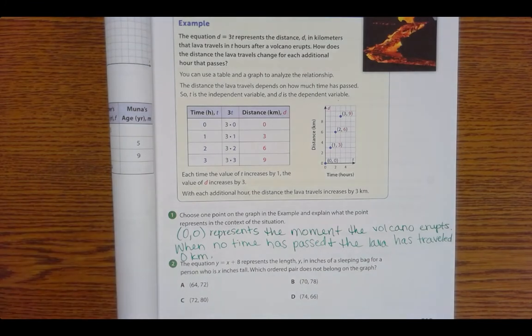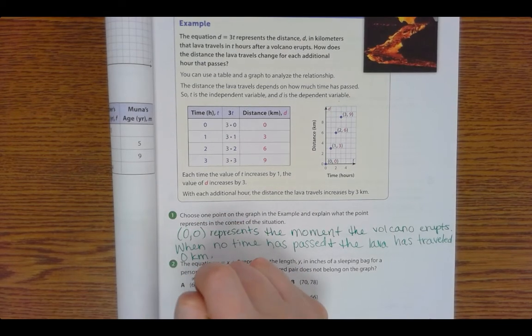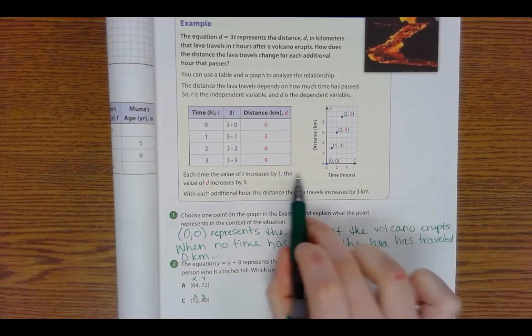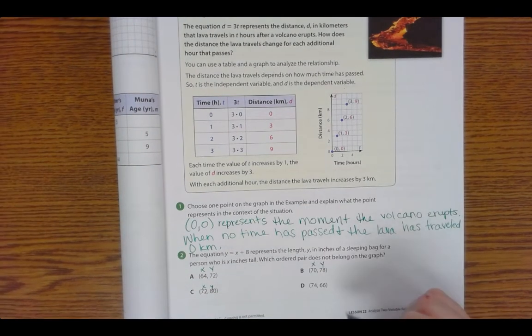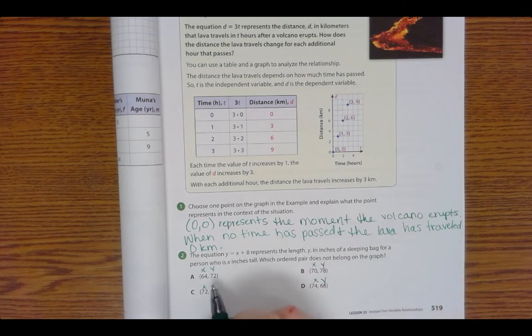All right, so the equation y equals x plus 8 represents the length y in inches of a sleeping bag for a person who is x amount of inches tall. Which ordered pair does not belong on the graph? So y equals x plus 8. We're going to look at x and y for each one of these. We've got to do x first and then y. We're going to plug each one of these in.